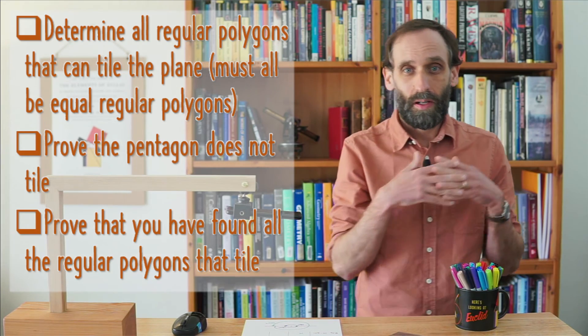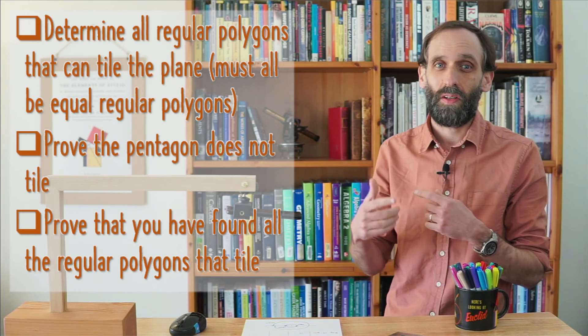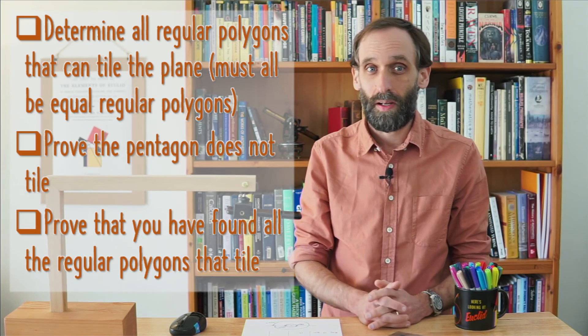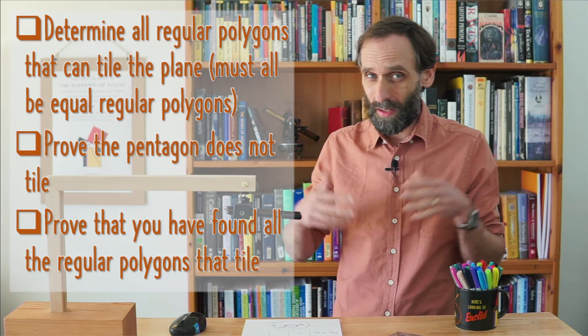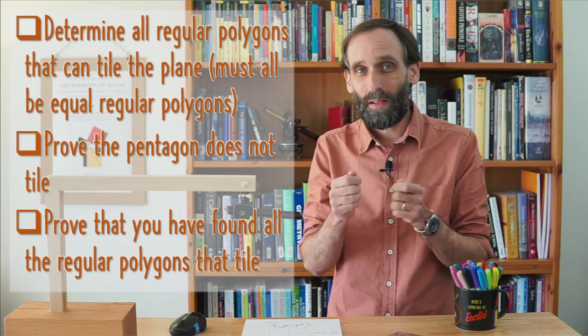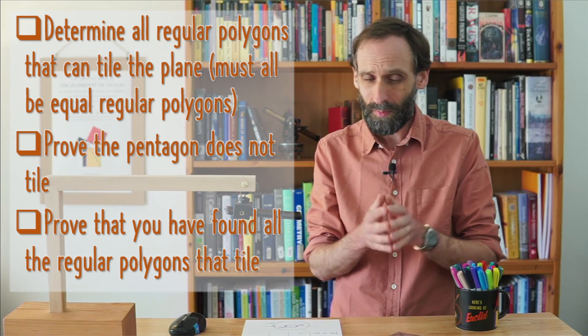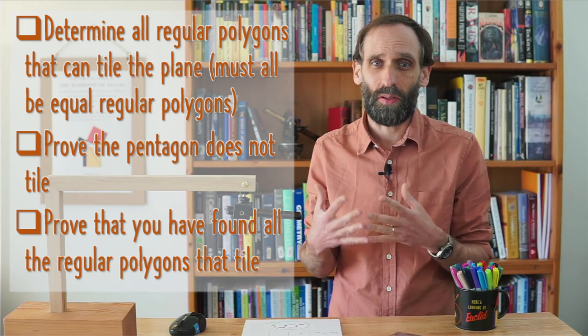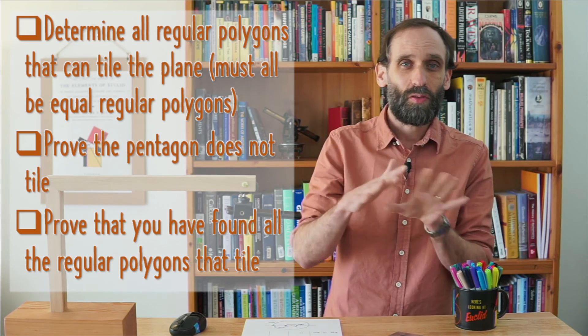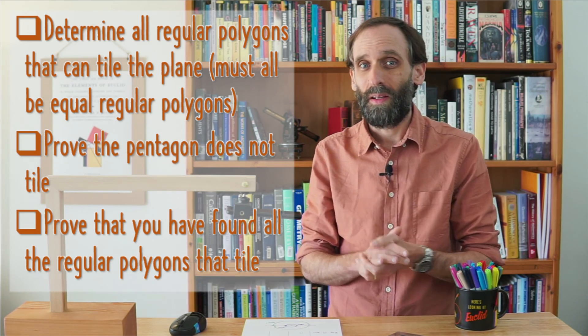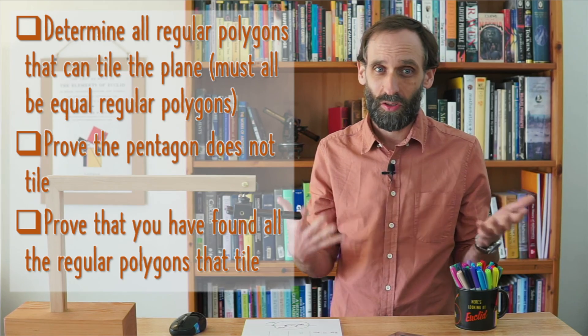Once you've done those things, go ahead and watch the next video. Remember to use the table. One thing that sometimes students find helpful is to print off and cut out regular polygons, or if you happen to have tiles like out of wood or something like that—but they have to be regular polygons. Actually playing around with them can be really useful. I'll put in the description and on the website a printout where you can cut out some different regular polygons, try to fit them together, and try to make them tile. Playing around with physical objects is a great way for you to build up your understandings and your intuitions.